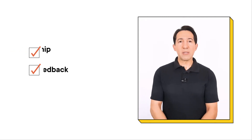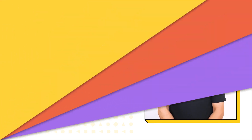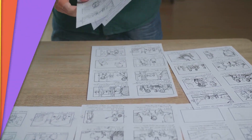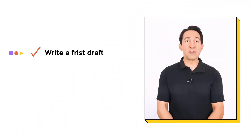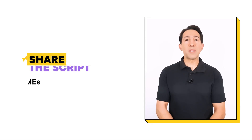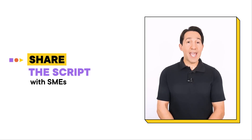Once you've developed your writing techniques, identified the type of microlearning video you want to create, and interviewed SMEs, the next step is to actually write the script. Create an outline or storyboard that maps out the structure of the video. Write a first draft of the script using the writing techniques and tips discussed above. Review and edit the script for clarity, concision, and relevance. Share the script with SMEs to get feedback and ensure accuracy.